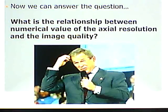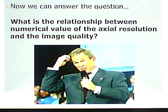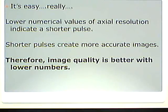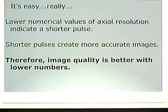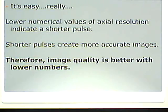What is the relationship between the numerical value of axial resolution and image quality? Lower numerical values of axial resolution indicate a shorter pulse, and shorter pulses create more accurate images. Therefore, image quality is better with lower numbers. If axial resolution is one millimeter versus five millimeters, the lower number gives the better picture, which has the shorter pulse — because axial resolution is determined by the spatial pulse length.